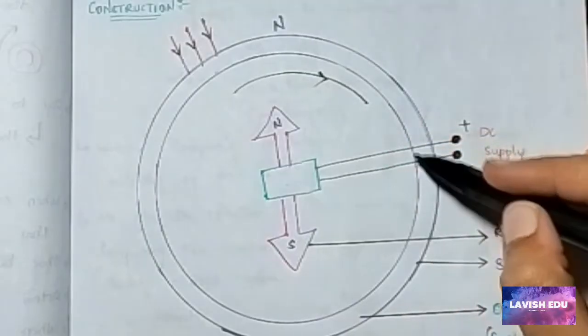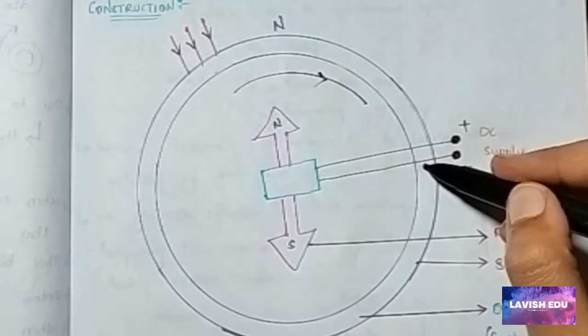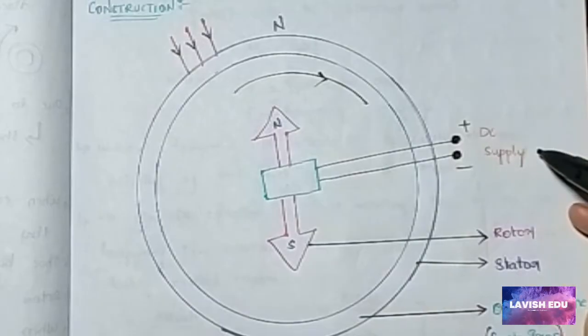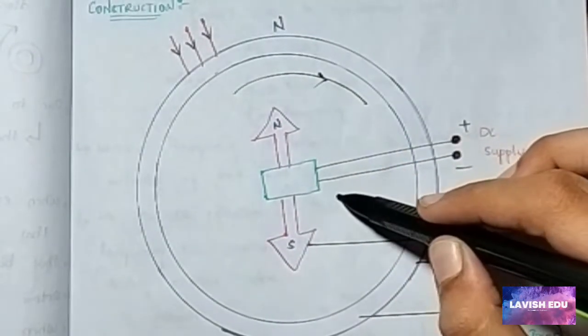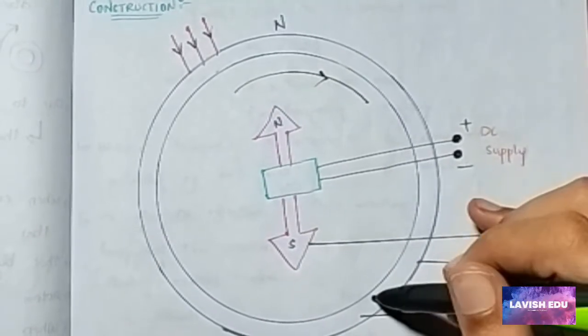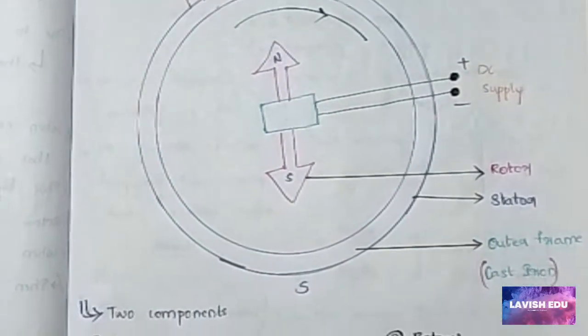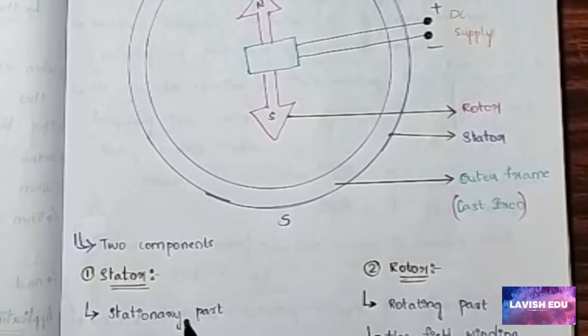Now this is the construction of the synchronous machine. We have different constructions, but this is the simplest construction. It has a DC supply with plus-minus signs and the rotor which rotates in the middle part of the machine. Here the outside part is the stator, and this is the outer frame which is made up of cast iron.